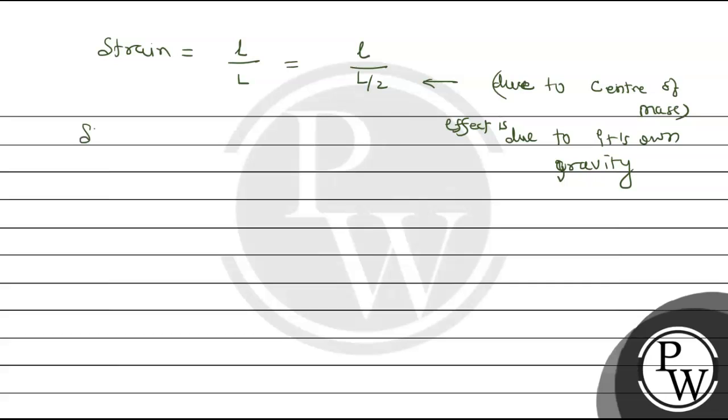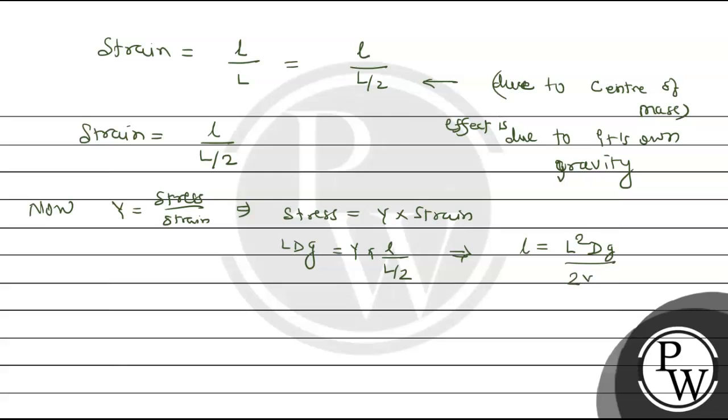Strain equals small l divided by L/2. Now Y equals stress upon strain, therefore stress equals Y into strain. L D G equals Y into l divided by L/2. Solving for small l, we get l equals L squared D G upon 2Y.